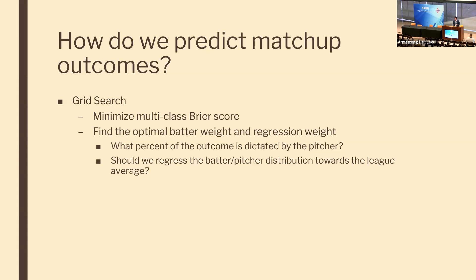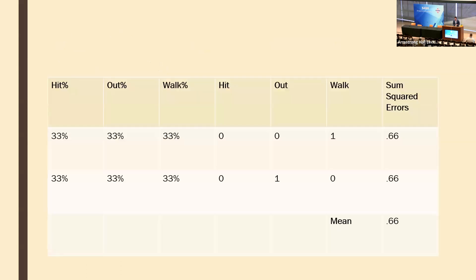I used a grid search method to test every different batter and pitcher weight to find the most optimal in predicting matchup outcomes. Here's a simplified version of the data — in reality I used specific hit and out types, but for readability, let's walk through the example used by Jin and Chen.